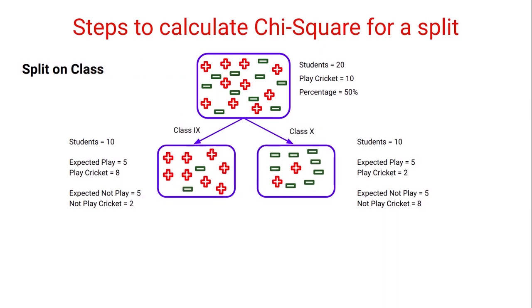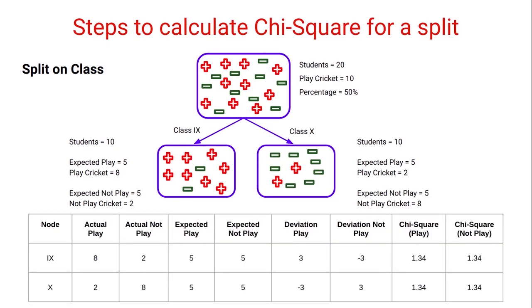Similarly, we calculate the chi-square value for the split on the class variable. We build the same kind of table — I suggest you calculate these values on your own and check your results, as this will help you understand how the chi-square process works. The chi-square value for the split on class comes out to be around 5.36. So now we compare the two chi-square values.